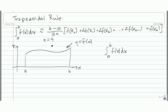Using n equals 4 and the trapezoidal rule to approximate this integral means we're going to divide this region up and approximate it using 4 trapezoids. Our first step is to divide the region into 4 equal pieces. The width of each piece is delta x, found by b minus a over n, which in our case is b minus a over 4.